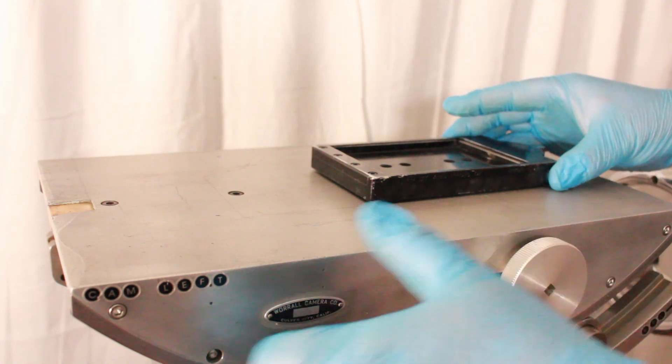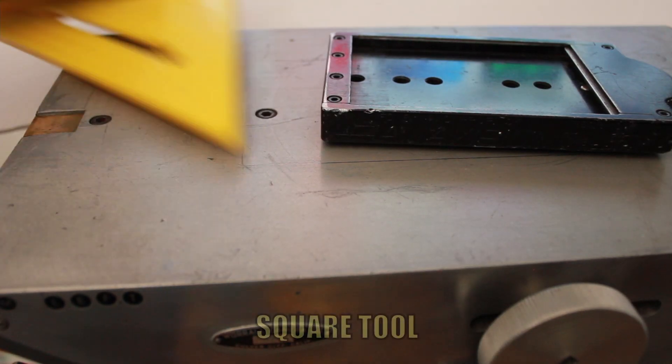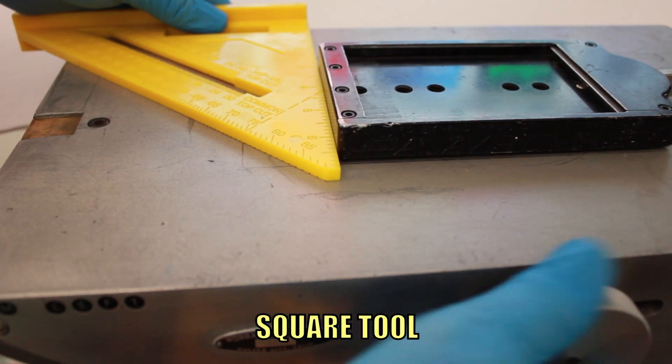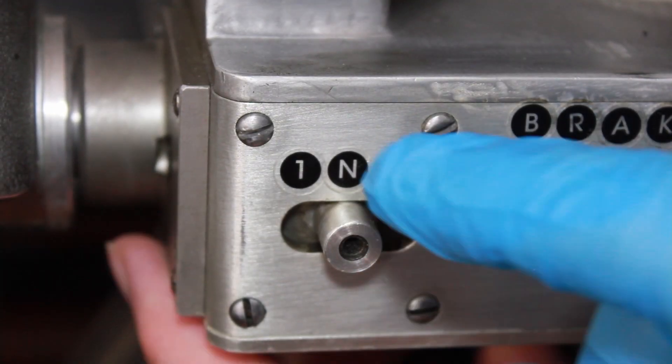Use large knob to move quick release plate to a middle position. Use the square tool to correctly align the plate and tighten in place. Attach pan wheel.